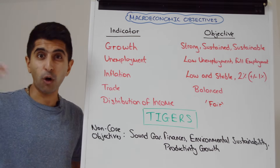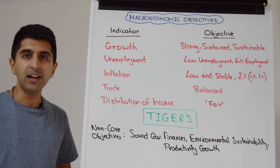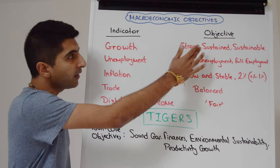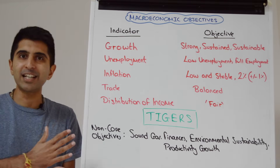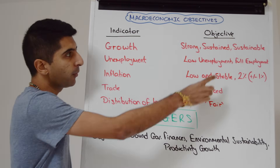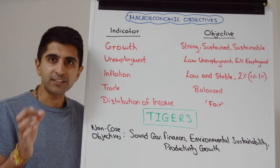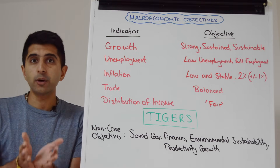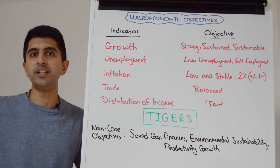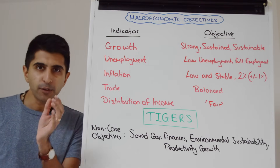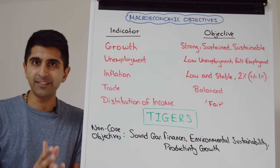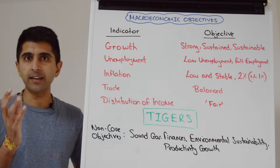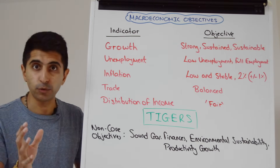We want growth to be strong — high — meaning high incomes and high living standards. We want it to be sustained, continuous over time. And we want it to be sustainable, meaning the way in which we're growing today can continue over time. That means growth without excessive inflationary pressures, and growth without excessive environmental damage.